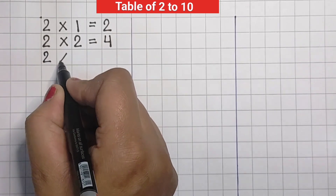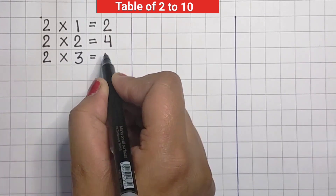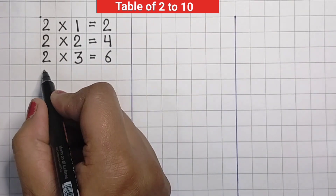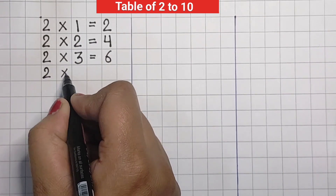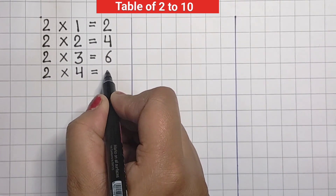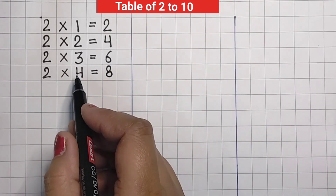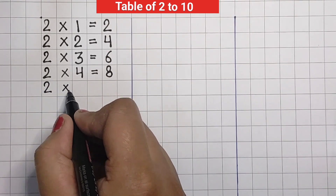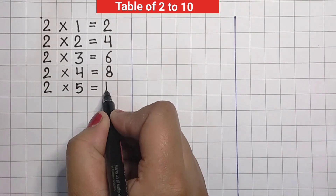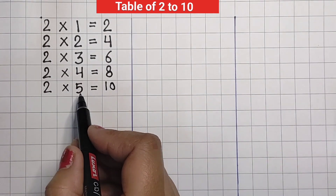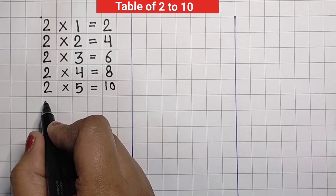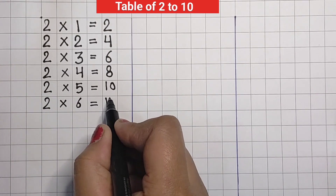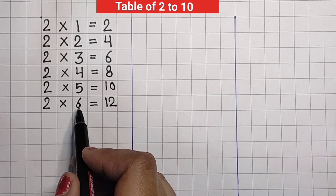Two, three jaa, four. Two, four jaa, six. Two, three jaa, six. Two, four jaa, eight. Two, four jaa, eight. Two, five jaa, ten. Two, five jaa, ten. Two, six jaa, twelve. Two, six jaa, twelve.